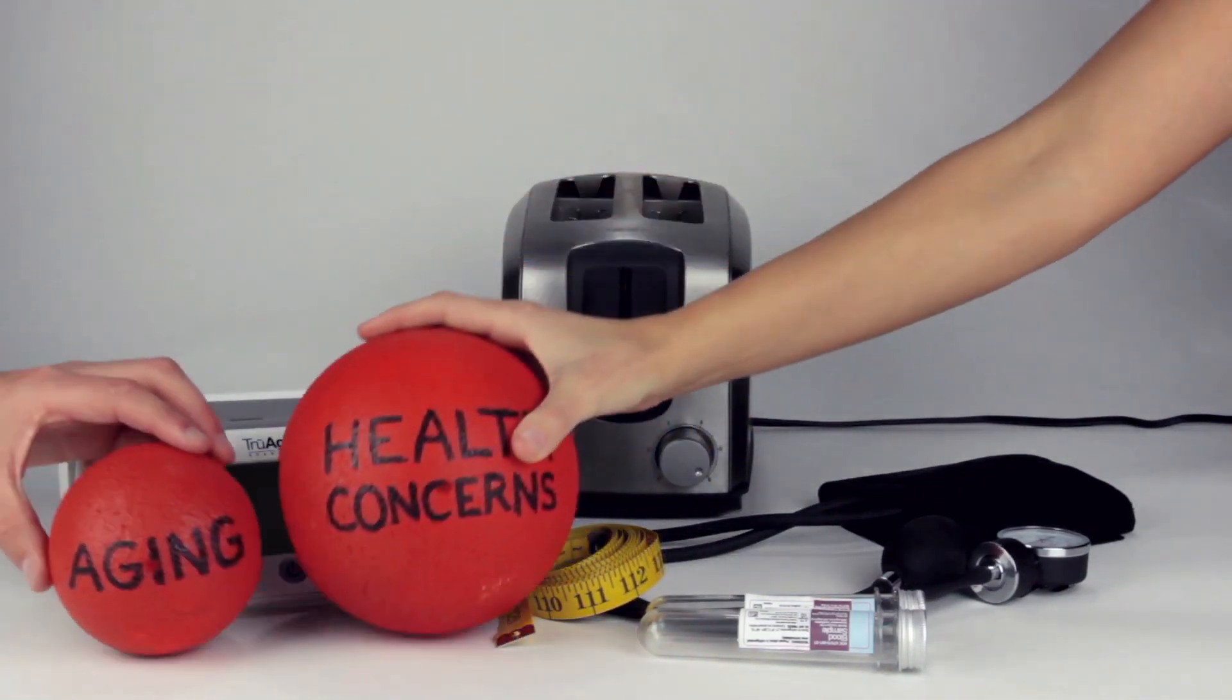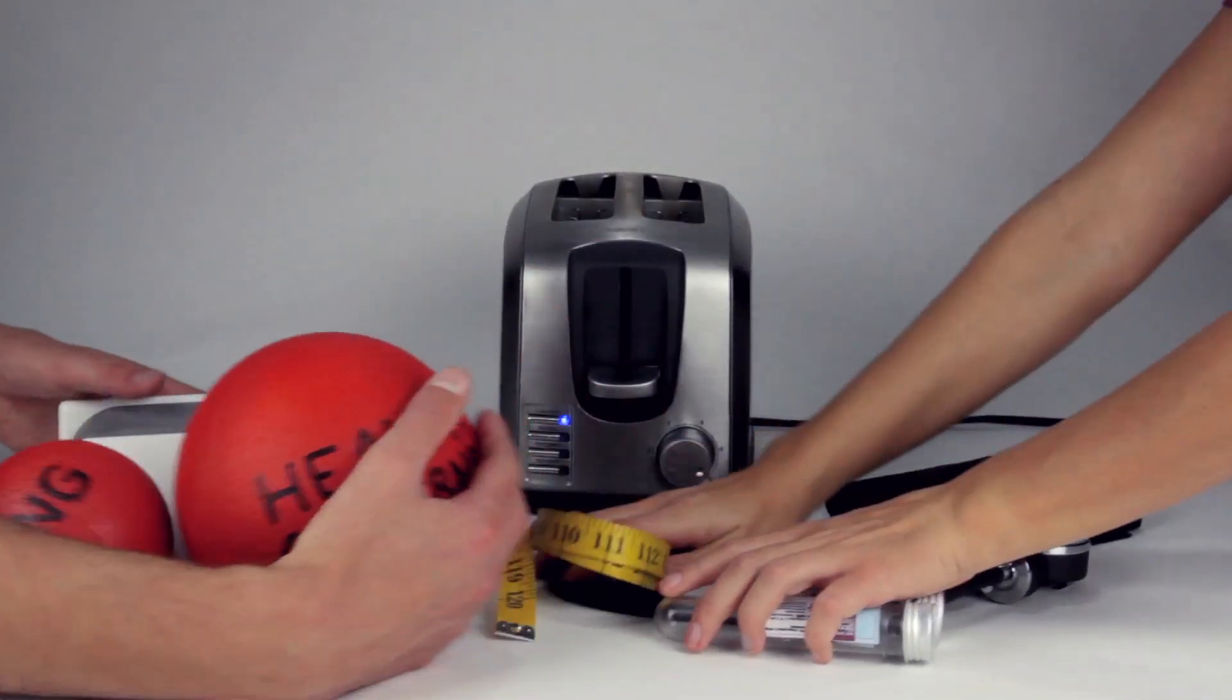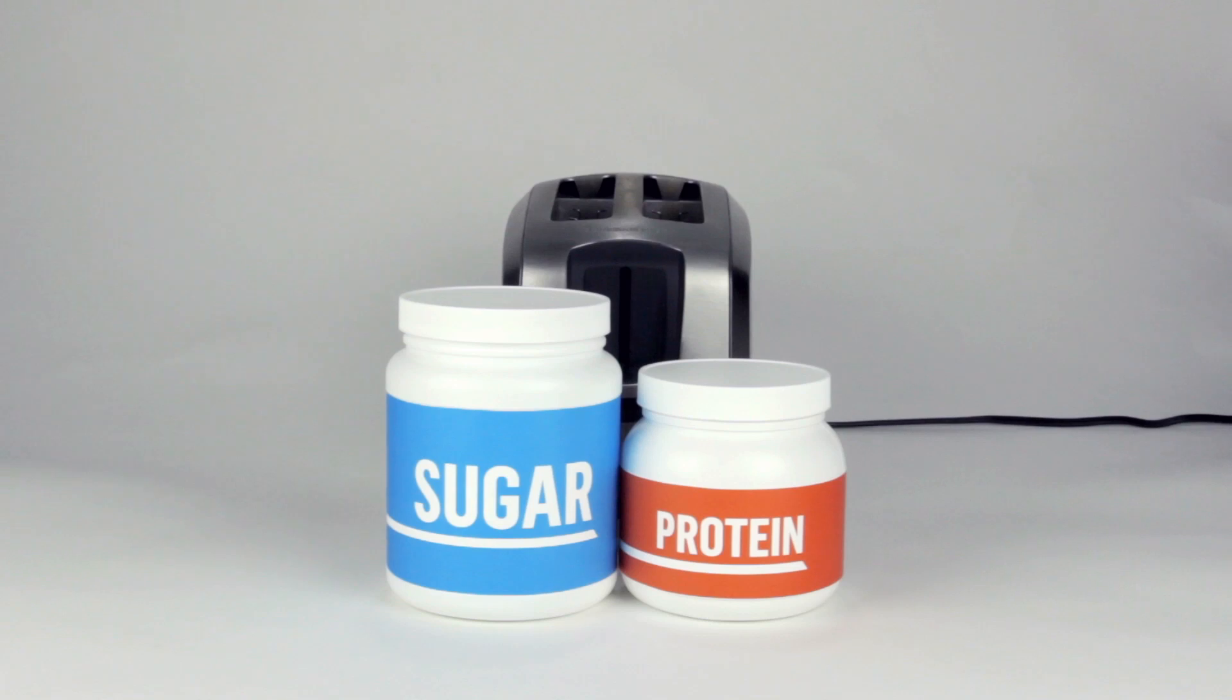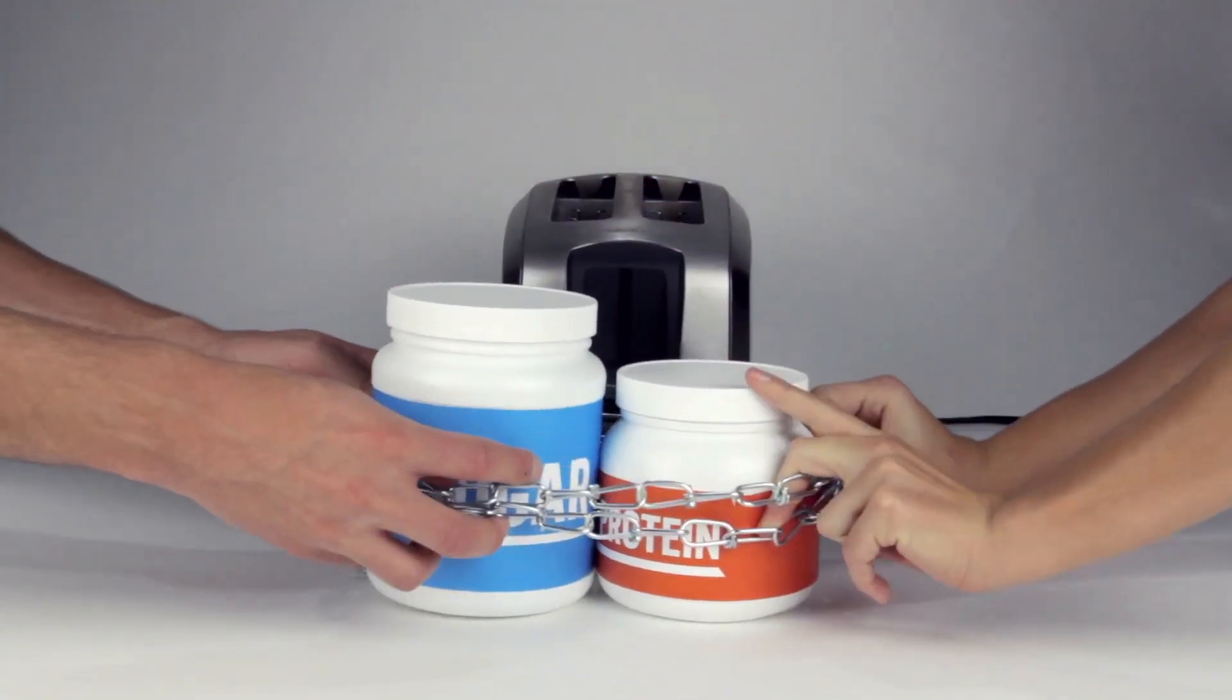Simply put, AGEs are one of the biggest causes of health concerns and aging. AGEs are harmful compounds that form when excess sugar and protein bind together. This process is known as glycation.